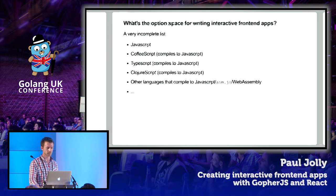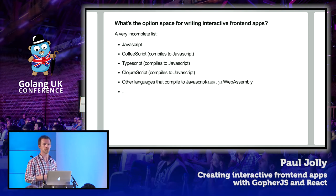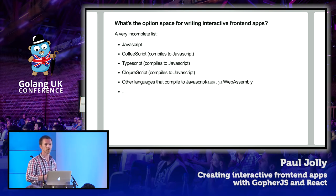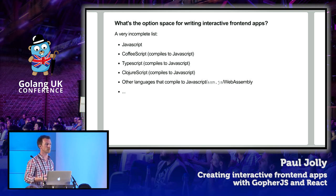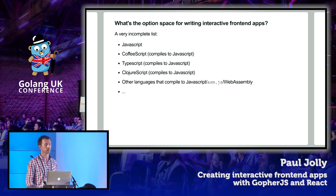So what's the option space if we want to build interactive front-end apps? This is a very incomplete list. JavaScript is obviously at the top, because that's what we have to end up with. Then there's effectively a myriad of other options that compile from your favorite language to JavaScript. CoffeeScript is one that was mentioned in the previous presentation. TypeScript is one that a number of people may be familiar with. ClojureScript is another popular one — I think that's what they use to write the CircleCI interfaces. And other languages that may compile to JavaScript, ASM.js, or WebAssembly.